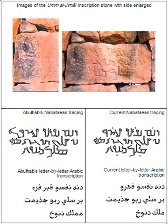As compared to other Aramaic-derived scripts, Nabataean developed more loops and ligatures, likely to increase speed of writing. The ligatures seem to have not been standardized and vary across time and space. There were no spaces between words.